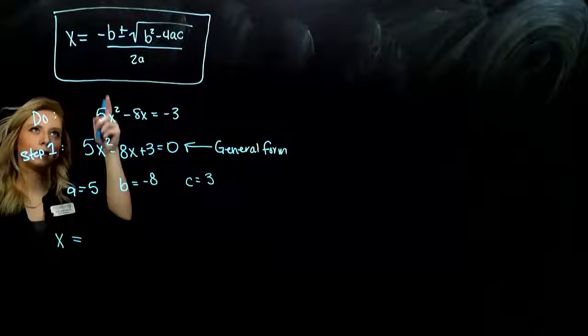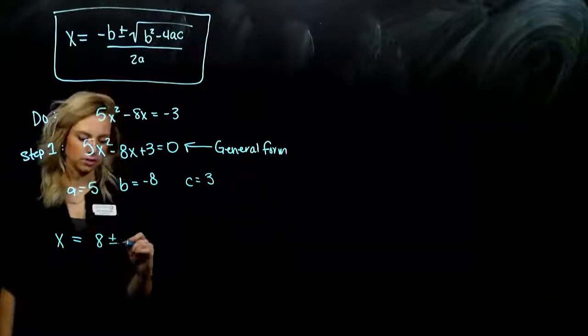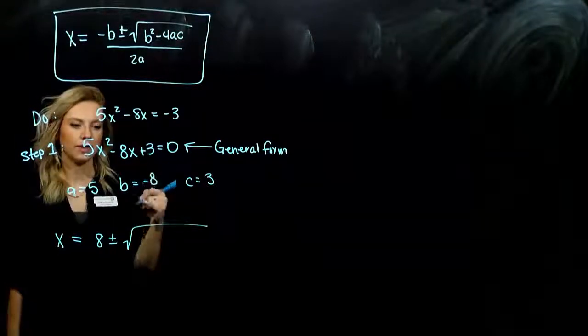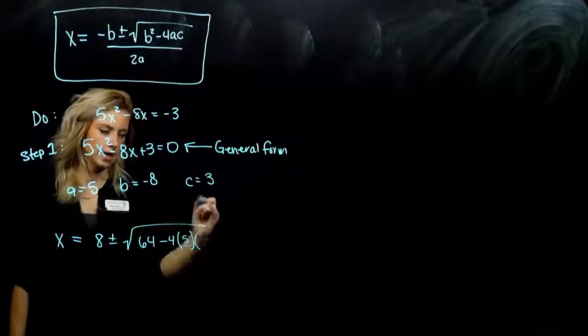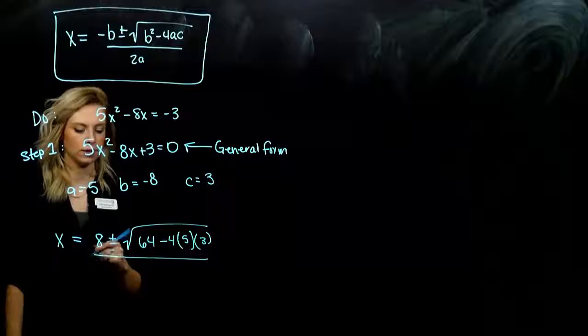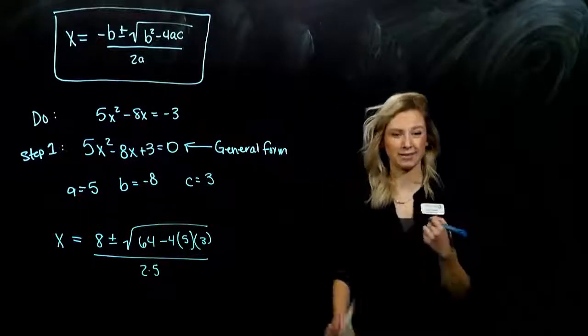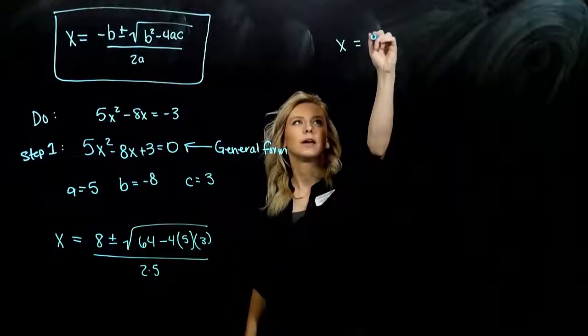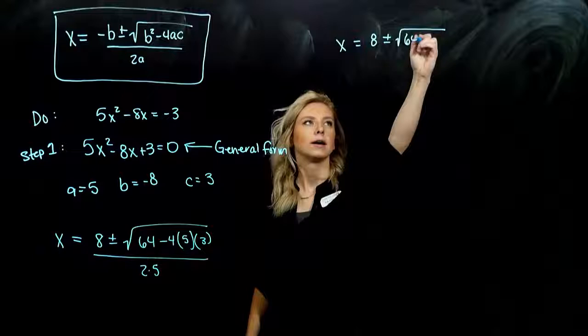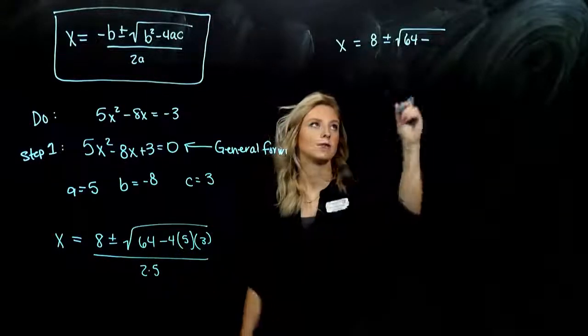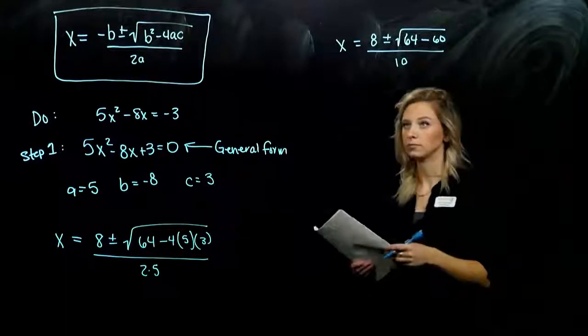X equals negative b. So negative of negative eight gives me positive eight. And I have two options. Plus or minus the square root of b squared. So negative eight times negative eight is positive 64. Minus four times a, which is five, times c, which is three. And you can evaluate like this as we're going along. And that's all over two times a. Two times five, down below there. And that's super ugly form. We want to make it nicer. Simplify down as far as we can go.